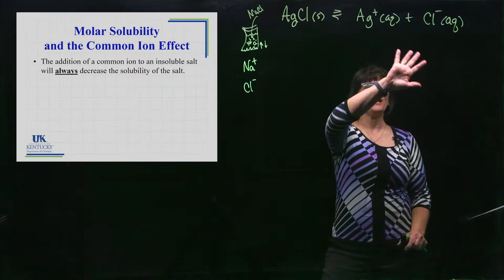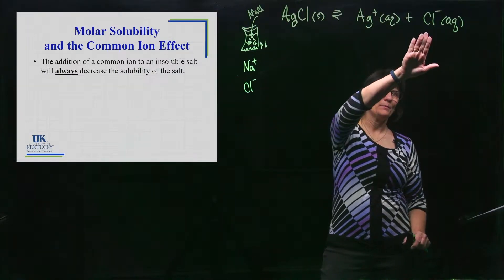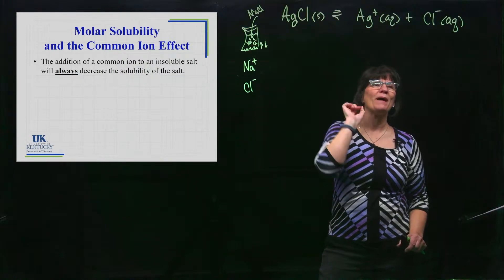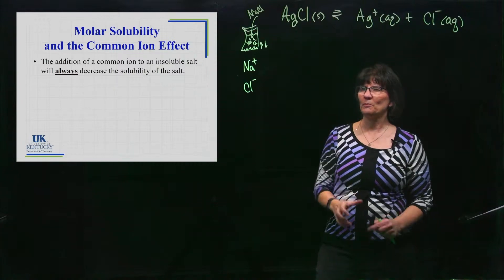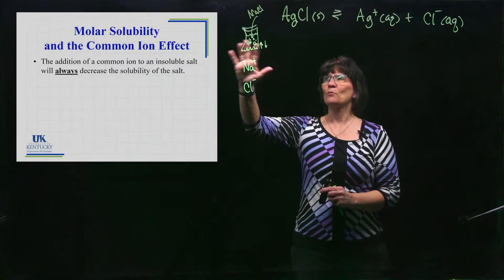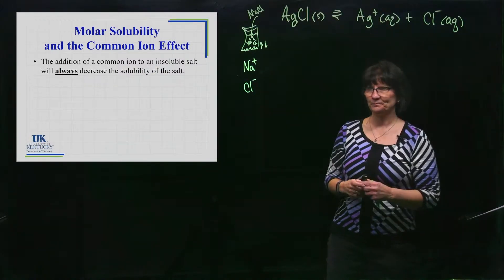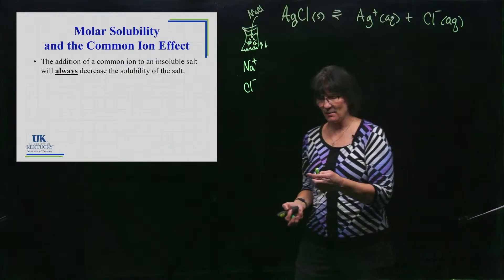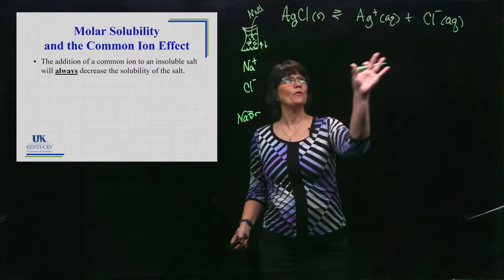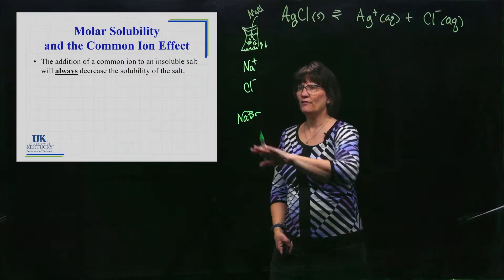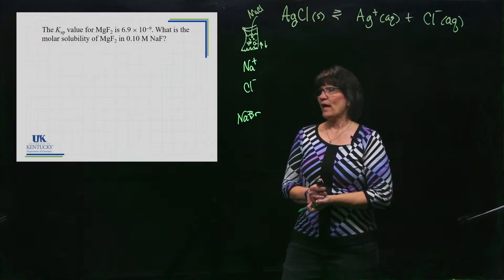When you try to dissolve an insoluble salt into a solution that contains these ions, it will be less soluble — that's an always statement. It's not a crowding issue. There is an equilibrium between these ions, and when you add something to that equilibrium it shifts to try to get back to the same K value. It has to be very specifically one of the ions in common. If you dumped sodium bromide in there instead, that would have no effect on this equilibrium because none of those ions are in common.